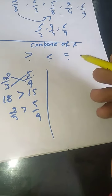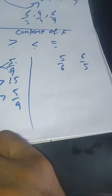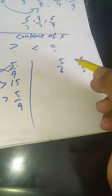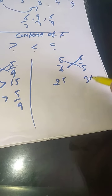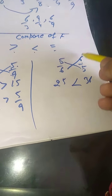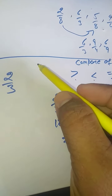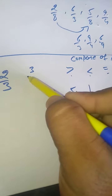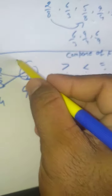एक और example: 5/6 and 6/5। Cross multiply करेंगे — 5 × 5 = 25 और 6 × 6 = 36। 36 is greater, so 6/5 is greater than 5/6. Another example: 2/3 and 3/2 — 2 × 2 = 4 and 3 × 3 = 9, so 3/2 is greater।